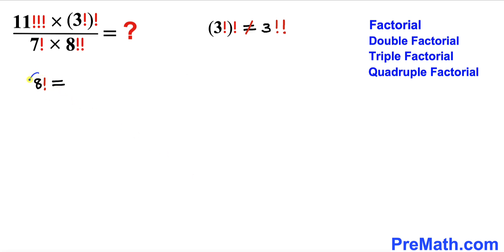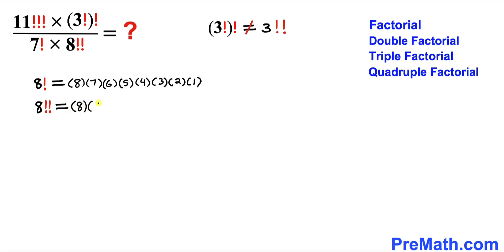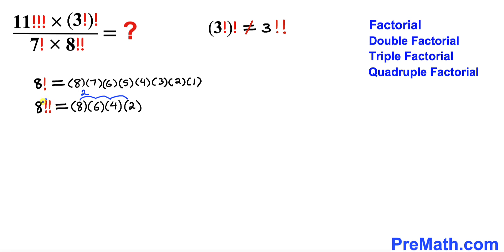Now let's consider the 8-series examples. 8 factorial is 8 times 7 times 6 times 5 times 4 times 3 times 2 times 1. For 8 double factorial, we subtract 2 each time: 8 times 6 times 4 times 2. The next term would be 0, and whenever 0 or a negative number shows up we stop, so we stop at 2. The common difference is 2.